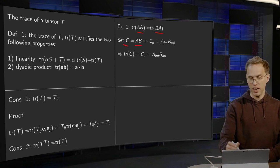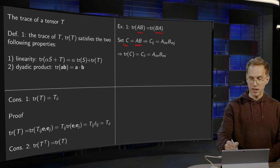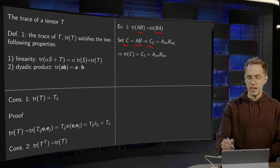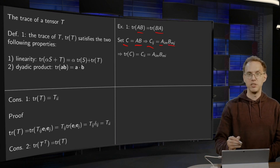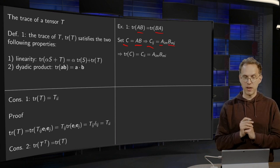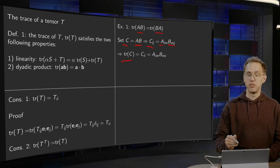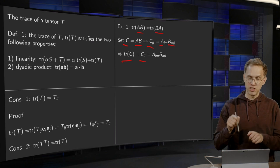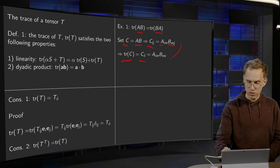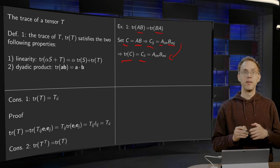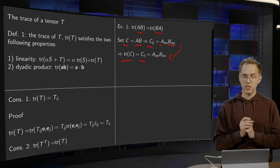We set C equals A times B. Then we can write the component Cij as AimBmj, just a normal matrix product. And then we can compute the trace of C, trace of C equals Cii. So you have to set j equal to i, so putting j equal to i gives you AimBmi. So that's the trace of C equals AB.